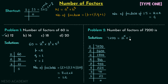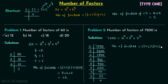We have five 2s, two 3s, and two 5s, so 7200 = 2^5 × 3^2 × 5^2. The total number of factors = (5 + 1) × (2 + 1) × (2 + 1) = 6 × 3 × 3 = 54. So 54 is the answer for this problem.